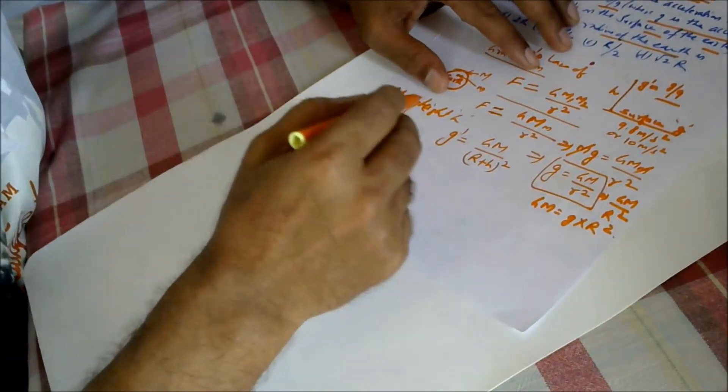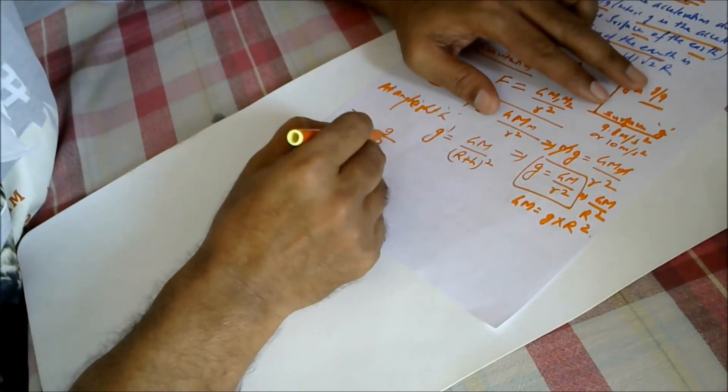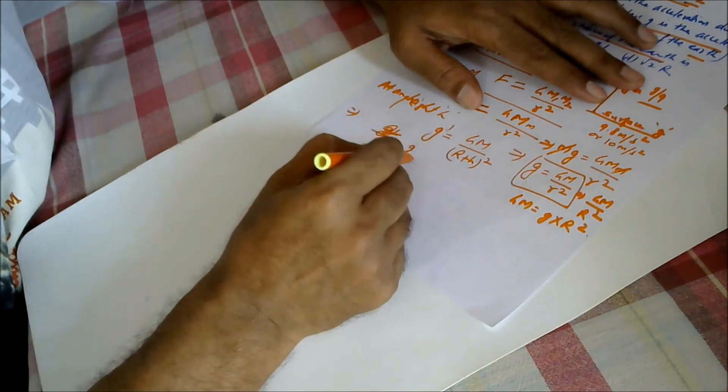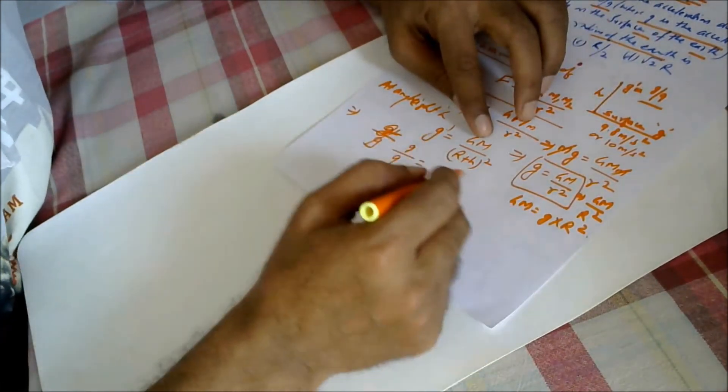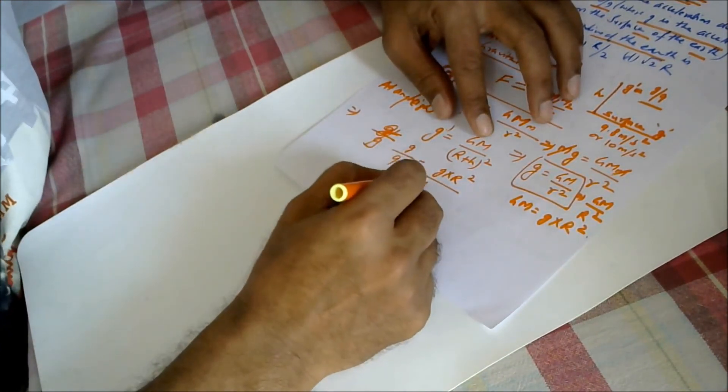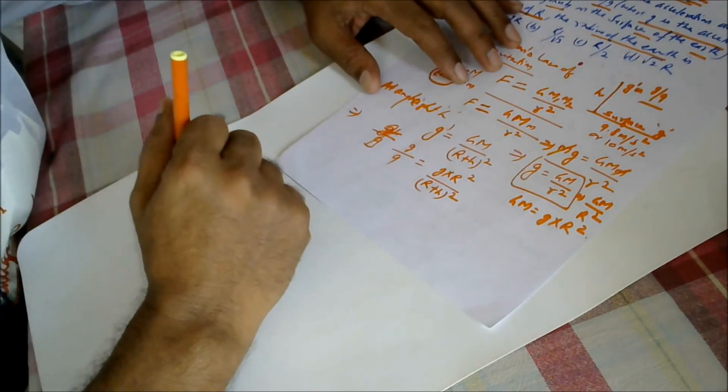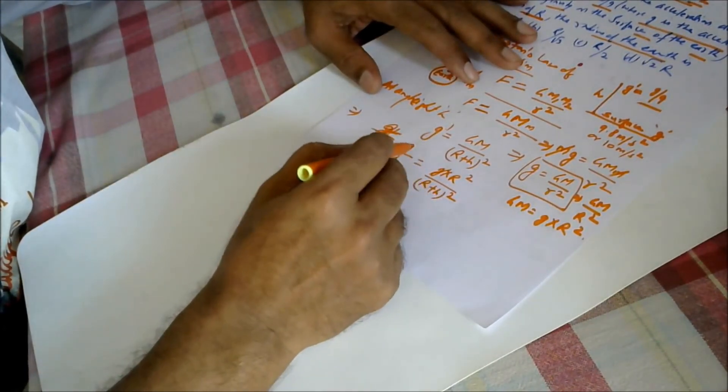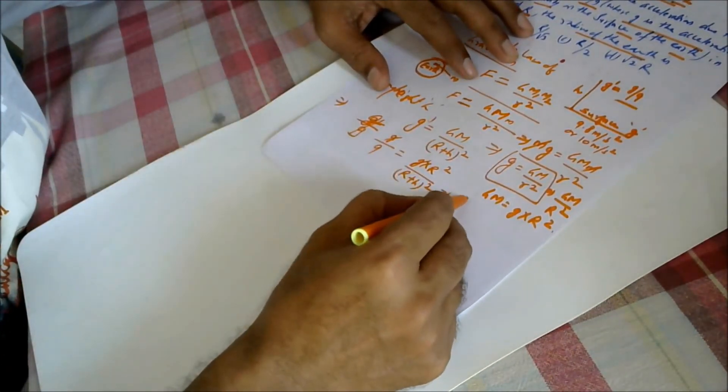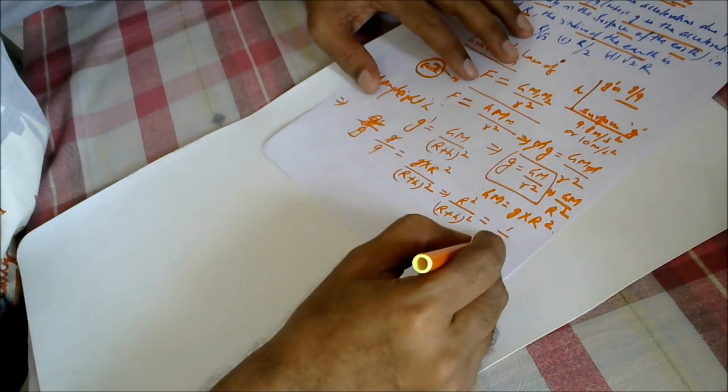So g dash is g by 9. So g by 9 equals GM, which is g into r square, divided by (r plus h) whole square. So g will get cancelled. This will give us r square by (r plus h) whole square equals 1 by 9.